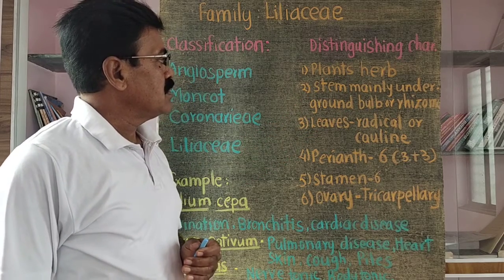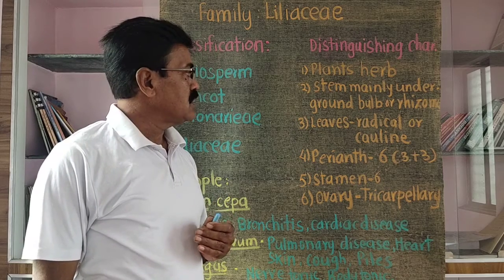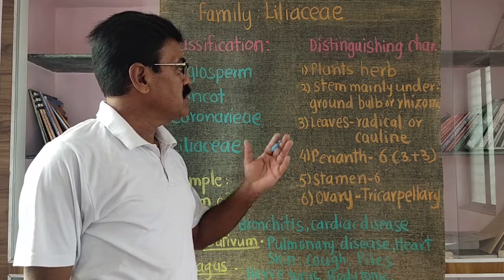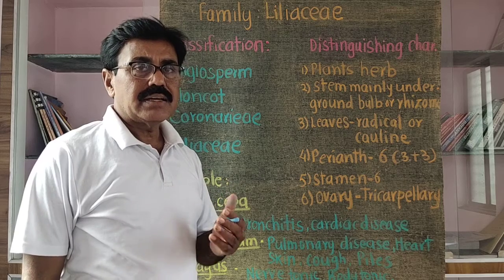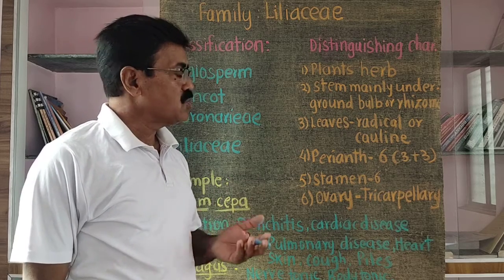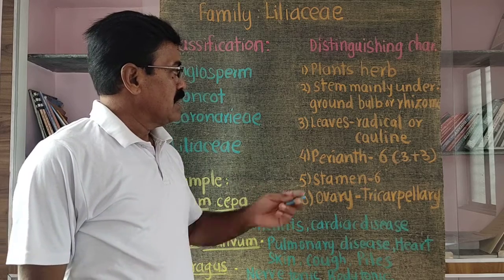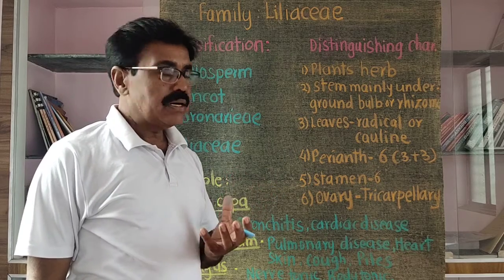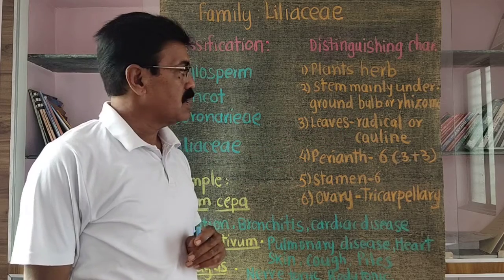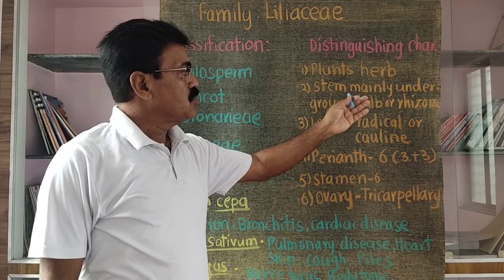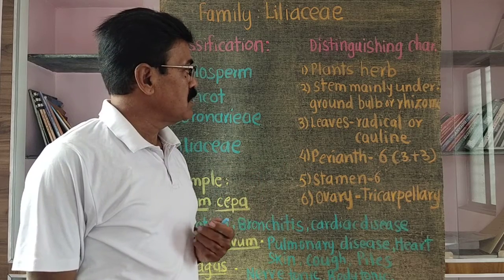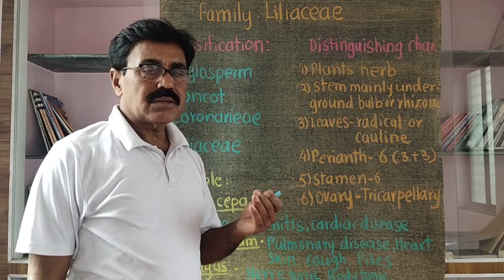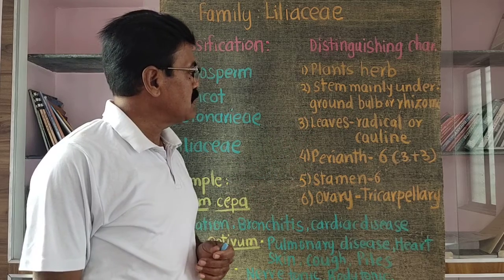The second character is that the stem is mainly underground. These underground stems have modifications like a bulb, rhizome, or tuber. A good example of a bulb modification is the onion, Allium cepa. Gloriosa superba is an example of a tuber, and some plants have a rhizome.